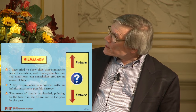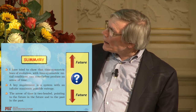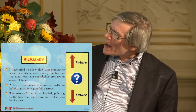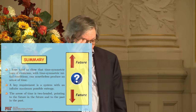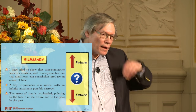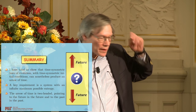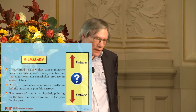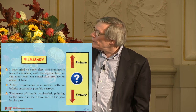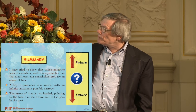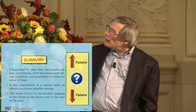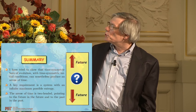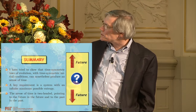And that latter point is something we know is true for our world. To summarize: I've tried to show that time-symmetric laws of evolution with time-symmetric initial conditions can nonetheless produce an arrow of time. A key requirement is that the system has an infinite maximum possible entropy — if the maximum possible entropy were not infinite, you would approach an equilibrium state and then have no well-defined arrow of time anymore. And the arrow of time generated this way is two-headed, pointing both to the future and to the past.